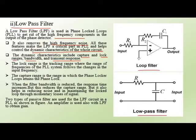The dynamic characteristics of the circuit include capture range, lock range, bandwidth, and transient response. The lock range is the tracking range — the range of frequency over which the PLL system follows the change in input frequency. The capture range is the range over which the phase-locked loop attains phase lock. When the filter bandwidth is reduced, the response time increases but the capture range is reduced. However, it also helps reduce noise and maintain the lock through momentary signal loss.